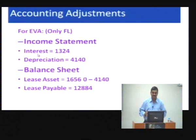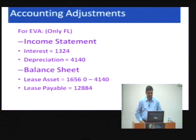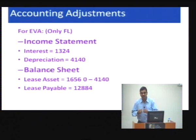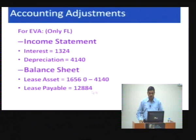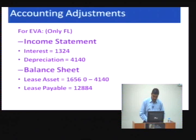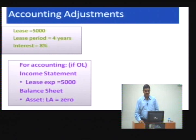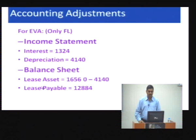For EVA, the lease is classified into interest and depreciation for the income statement. For the balance sheet, the present value of the lease payable is shown as the value of the asset, and every year depreciation is reduced from that to show the net asset value. So in the case of a lease, the accounting income statement shows only the lease expense with no balance sheet entry, whereas EVA adjustments affect both the balance sheet and the income statement.